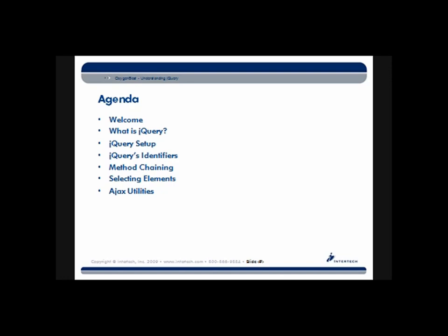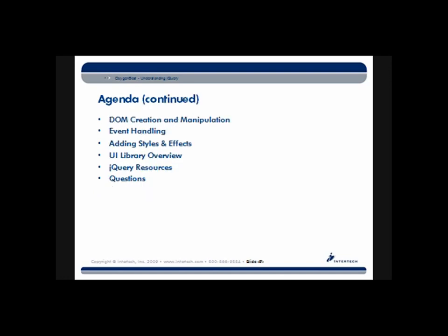We'll take a brief look at some Ajax utilities, then DOM creation and manipulation — DOM being the Document Object Model — followed by event handling. Then we'll cover the things people typically expect from a JavaScript framework: styles, effects, and widgets you can add to your web page. We'll look at the main UI library provided by jQuery for adding widgets. At the end of the presentation I'll give you resources to continue your jQuery education, and we'll have time for some questions and answers.